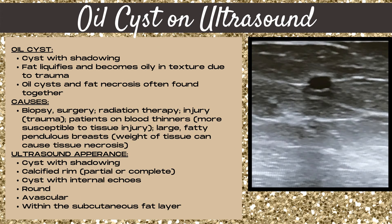Next, let's talk about oil cysts. An oil cyst is a cyst with shadowing — the only time you'll see a cyst shadow — because an area of fat liquefies and becomes oily and textured, usually due to trauma, and that thick oily substance produces posterior shadowing. Causes are the same as fat necrosis: biopsy, surgery, radiation therapy, injury or trauma, blood thinners, or large fatty pendulous breasts. On ultrasound, it appears as an avascular cyst with shadowing, often with very low-level internal echoes, and a partial or complete calcified rim. They are round and found within the subcutaneous fat layer.